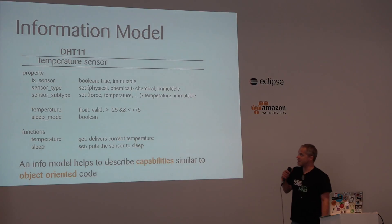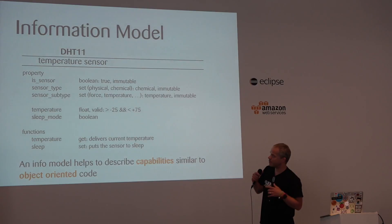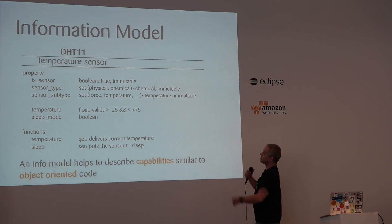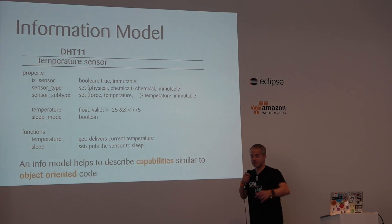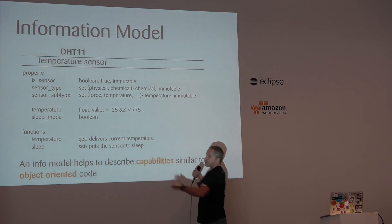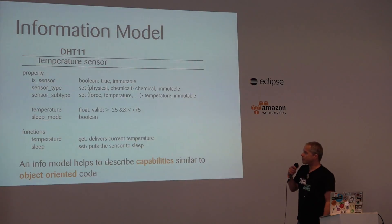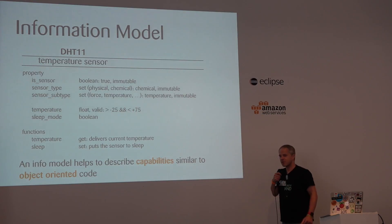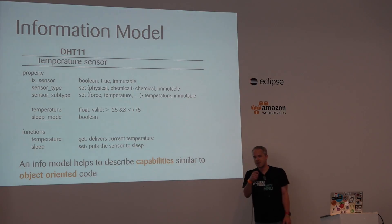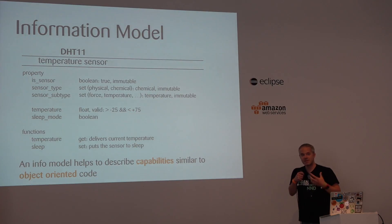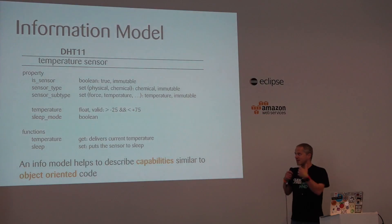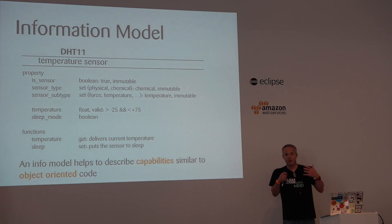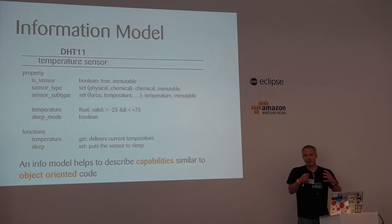This is an information model. Here we define our DHT11 sensor. It has a couple of properties: it's a sensor, there's a sensor type, and in that case it's a physical sensor — these are immutable annotations. So a temperature sensor doesn't automatically become a chemical sensor; it's always a physical sensor. But then there are properties that can change, for example the temperature. And although the DHT doesn't have a sleep mode, I squeezed one in for the sake of argument. There are also functions: I can read the temperature with a get function, and I can put it to sleep with a set function. Information models, if you're minded that way, could be described as concepts that are very much object-oriented.